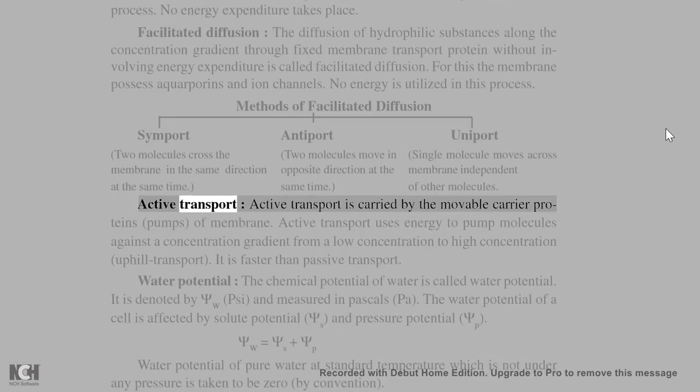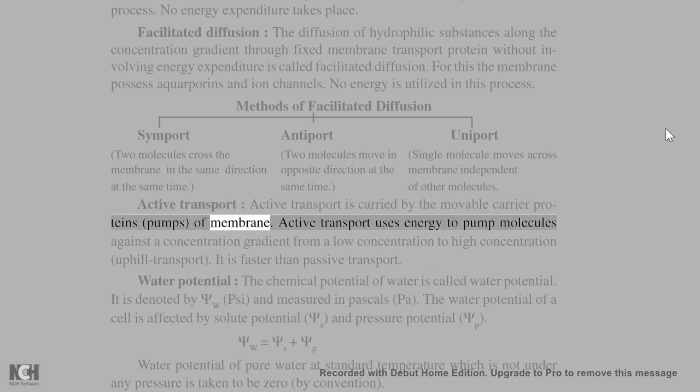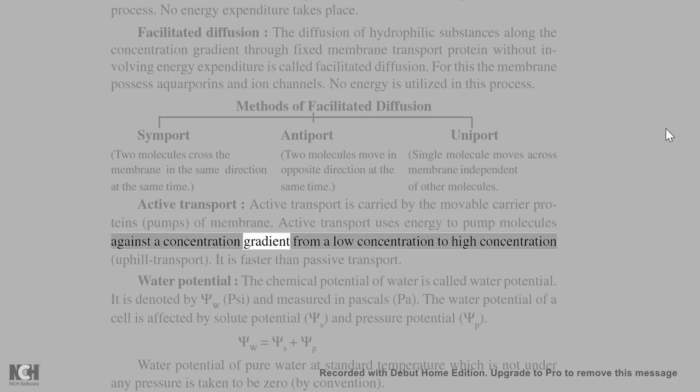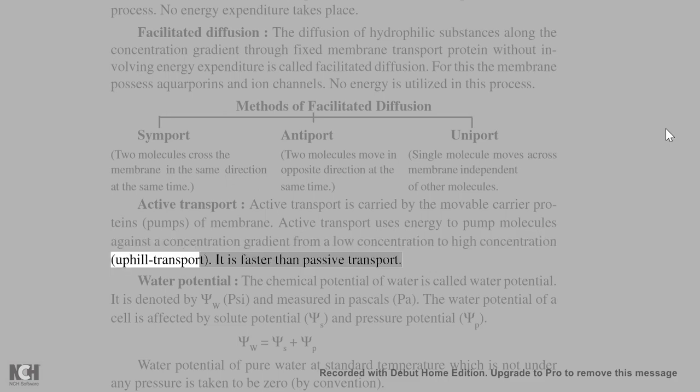Active transport: active transport is carried by the movable carrier proteins, pumps, of membrane. Active transport uses energy to pump molecules against a concentration gradient from a low concentration to high concentration, uphill transport. It is faster than passive transport.